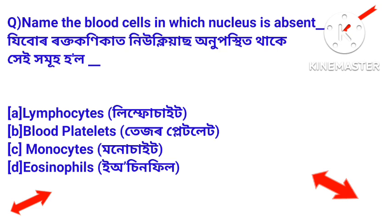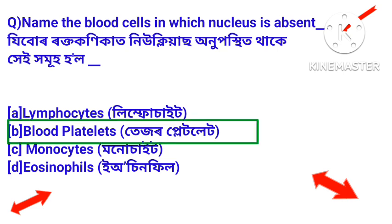Name the blood cells in which nucleus is absent — zivu roktakonika at nucleosor unupostit thakke. The answer is blood platelets. Blood platelet roktakonika homo hot nucleosor opositi kramanoe pwa jai.